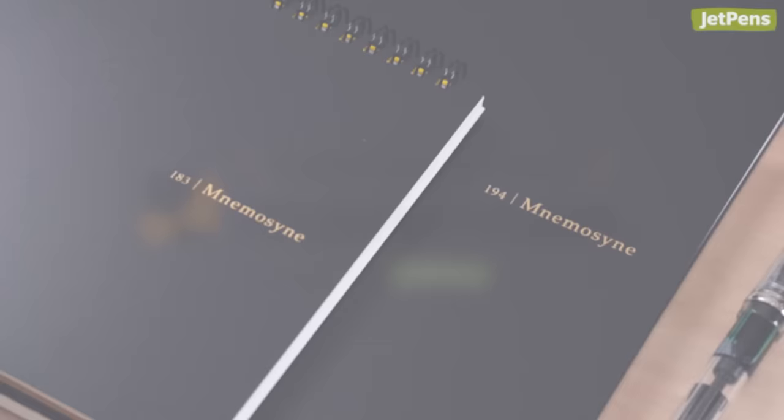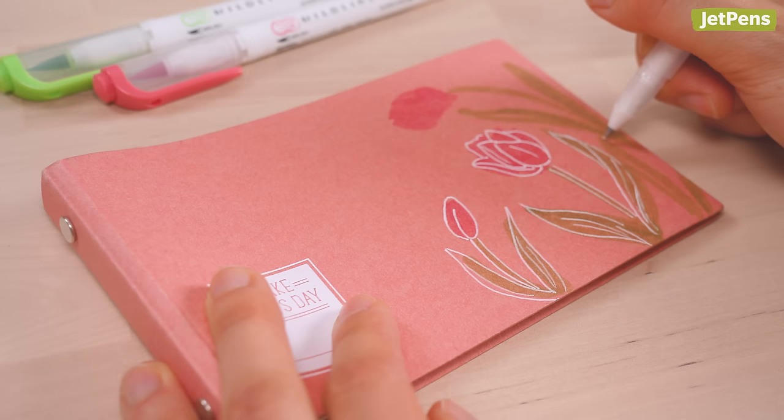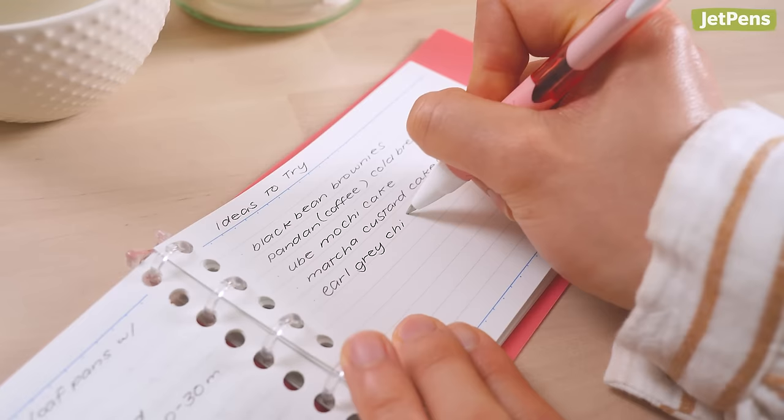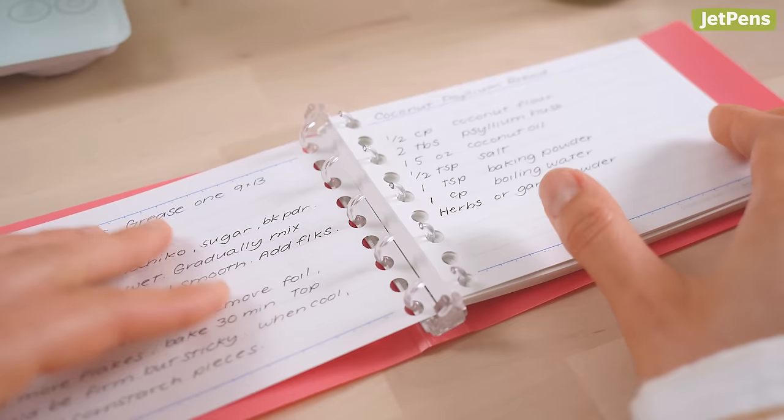Maruman is best known for the Nimosini line of notebooks, but we're big fans of their binders too. If you use loose-leaf papers, you know that a binder is one of the best ways to keep them organized.